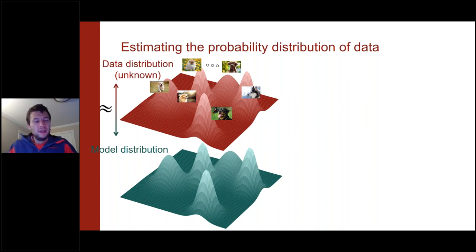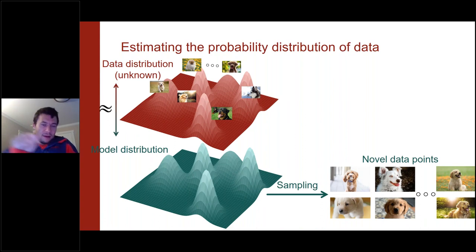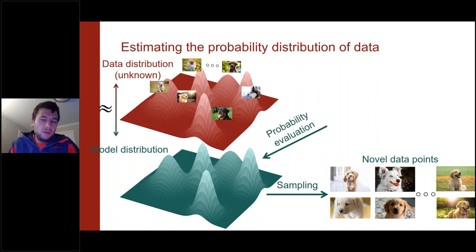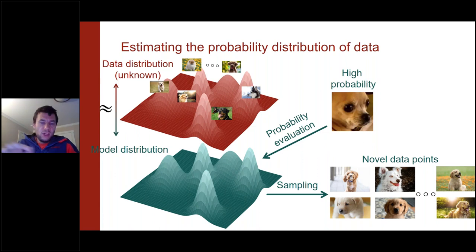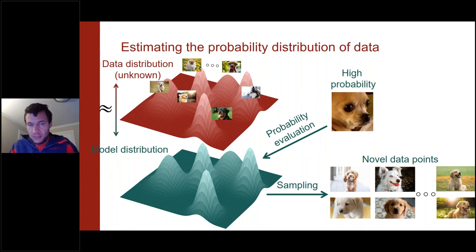The goal is to come up with an approximation of this unknown underlying function — a model that faithfully captures the true data distribution. If you have access to this model, you can sample from it by looking for high-probability regions to generate new data points, and you can also evaluate probabilities to check whether an input is an outlier.